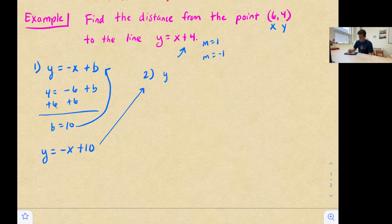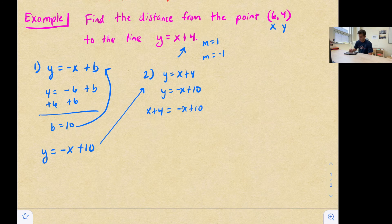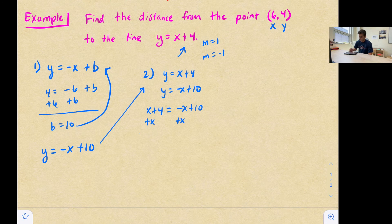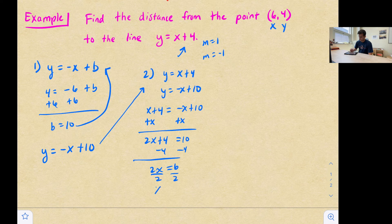Okay, so we're going to say y equals x plus four, and y equals negative x plus 10. And I'm going to solve by the method of substitution. So we notice y is equal to x plus four, and y is equal to negative x plus 10. So those expressions are both equal to each other. And here we're just going to solve for x. So we get 2x plus four equals 10. And we get 2x equals six, divide by two, so we get x equals three.